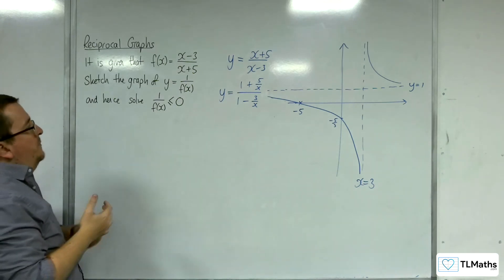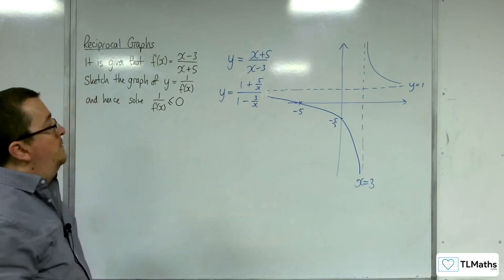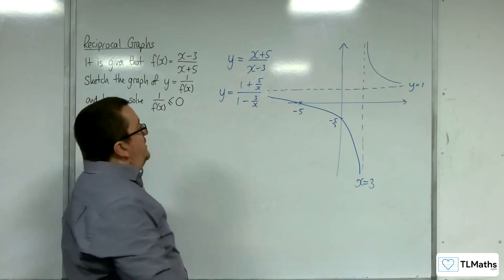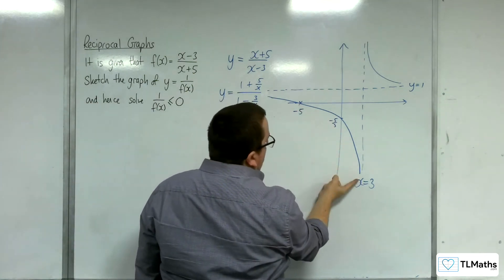So then, this question is, hence solve 1 over f of x is less than or equal to 0. Well, where is it below the x-axis? Well, it's below it there for that portion.